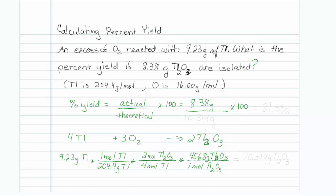These are now my balanced stoichiometry conversions. When I multiply that out, I find that my theoretical yield is 10.314 grams of Tl2O3. So I put that 10.314 grams here, do the division, and multiply by 100, and my percent yield is 81.3 percent.